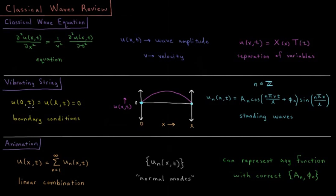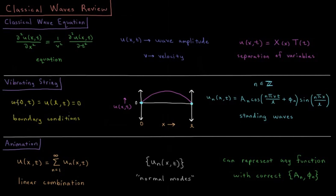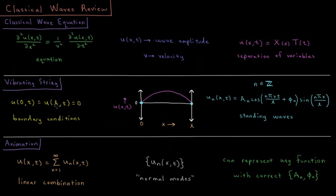We then apply this to the specific case of a vibrating string, where its ends are clamped down at u equals zero, at x equals zero and x equals l. Those are our boundary conditions, that u0 of t equals ul of t equals zero.